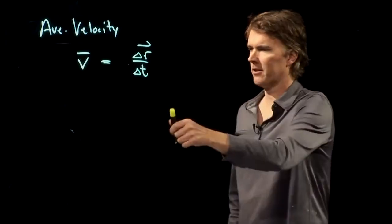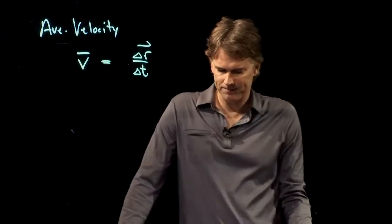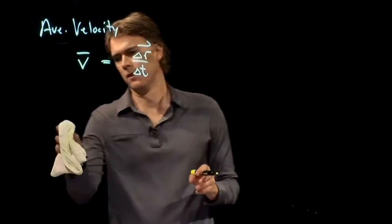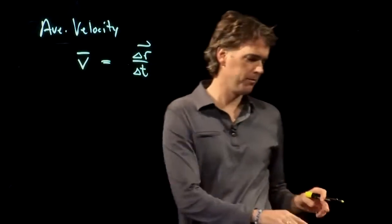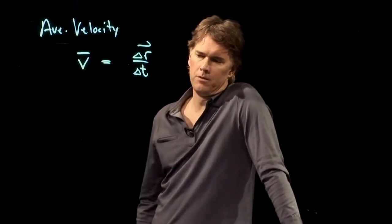Delta R is a vector. Delta T is, of course, a scalar. V is, therefore, a vector. Now, that's your average velocity, and we've done a bunch of problems calculating average velocity, but let's review.